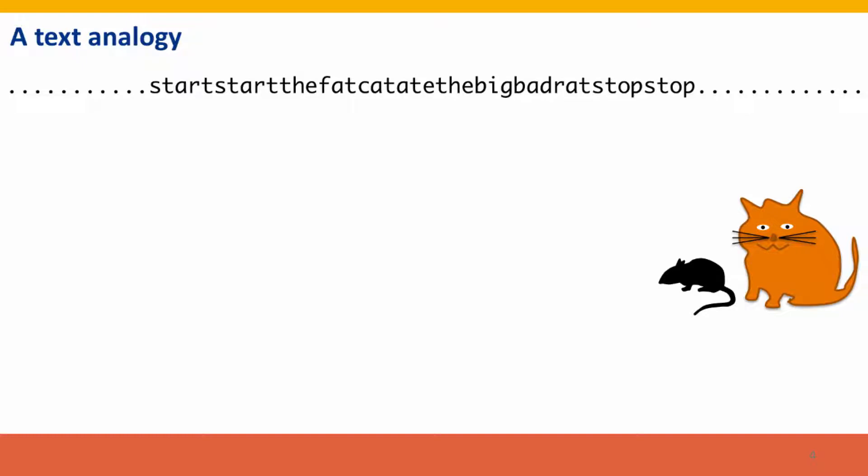So I've made a text analogy of the three processes just to sort of provide one more distinguishing perspective on it. We've got a sentence here, and the sentence says the fat cat ate the big bad rat. And it's flanked by two signals for starting, here and here, and two signals for stopping, here and here. And these control how the information is used.